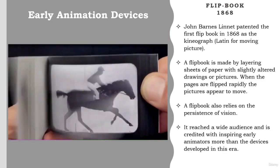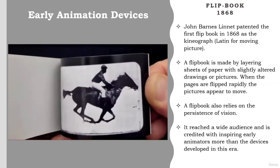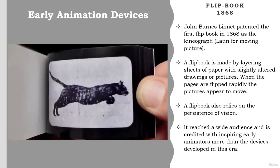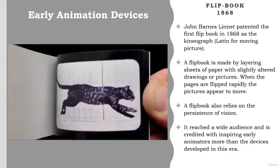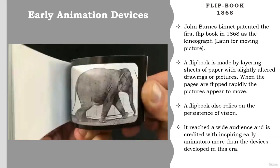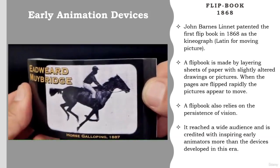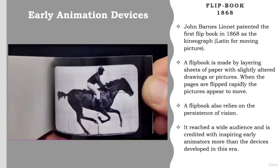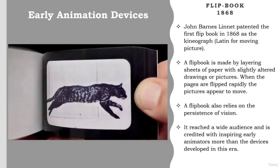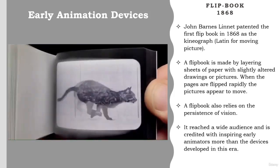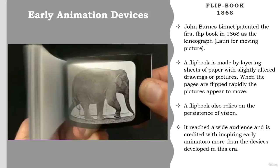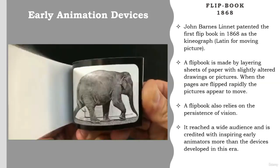John Barnes Linnet patented the first flipbook in 1868 as the Kineograph, Latin for 'moving picture.' A flipbook is made by layering sheets of paper, each having a slightly altered drawing or picture. When the pages are flipped rapidly, the pictures appear to move. A flipbook also relies on the persistence of vision. It reached a wide audience and is credited with inspiring early animators more than the devices developed in this era. Flipbooks remain one of the most popular and accessible forms of animation today.